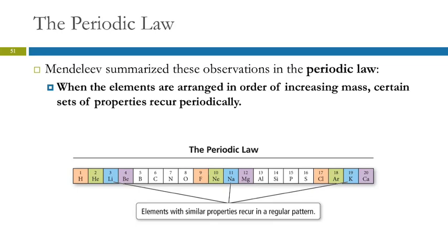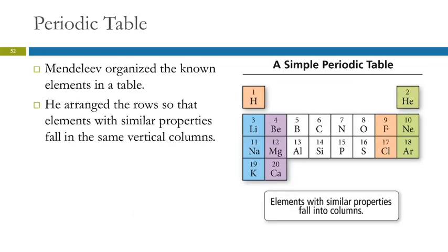So instead of having this one long list, he made a table. So this is a very simple periodic table showing just those first 20 elements. And we see here 2, 3, 4, et cetera. You go in order, and now all the green ones line up, and the orange ones, et cetera.